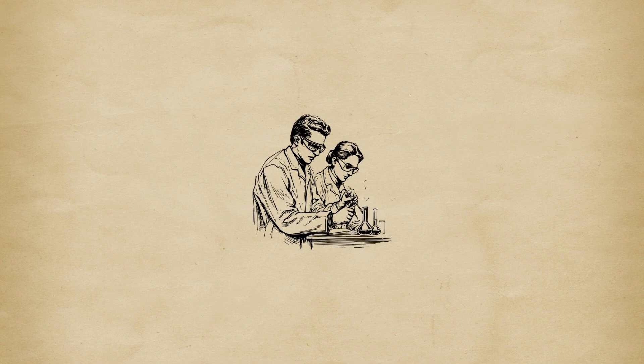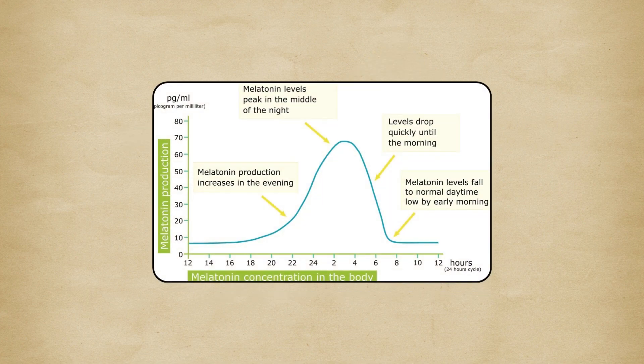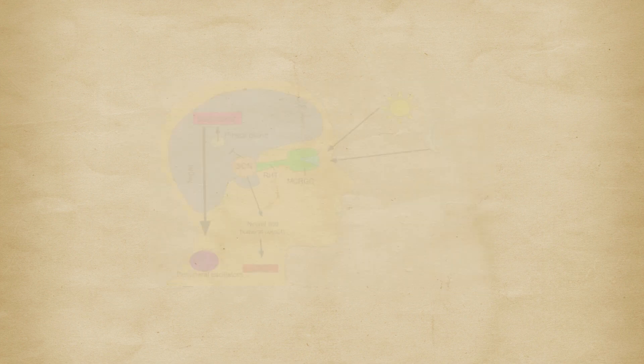According to sleep scientists, even small amounts of light or noise can disrupt your melatonin production, the hormone that tells your body it's time to sleep.